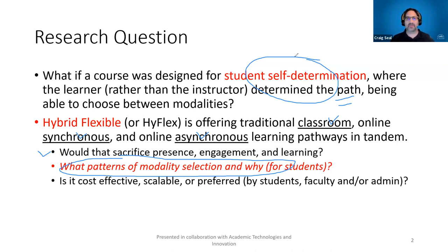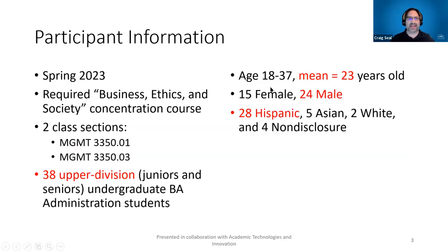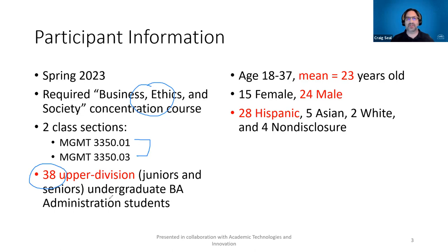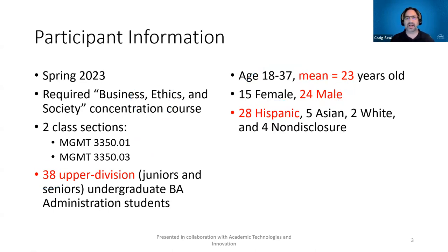Behind the scenes, we're looking more at the modalities of students moving forward. I taught two sections in spring — a required business ethics course for administration management students. Each section had about 20 students, so about 38 students total. These are upper division juniors and seniors, with a fairly wide range of ages, mean age 23. Most students were male and self-identified as Hispanic. We're a Hispanic-serving institution, so that's typical for our demographic.